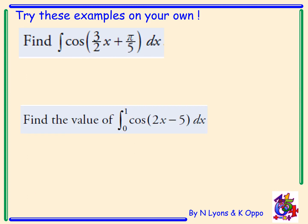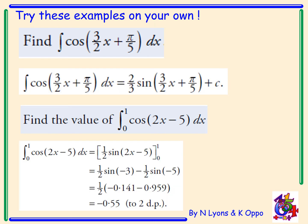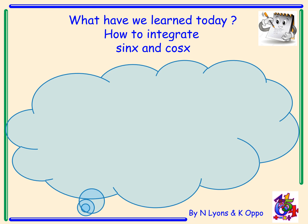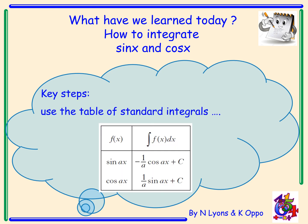Now try these examples on your own — please pause the video. The answer to the first question is 2 over 3 sine of 3 over 2 x plus pi over 5, plus c. The second one has a final answer of negative 0.55, correct to two decimal places. Today we have learned how to integrate sine x and cos x. The key steps are using the table of standard integrals, inserting limits if given, and remembering the constant of integration if no limits are present.